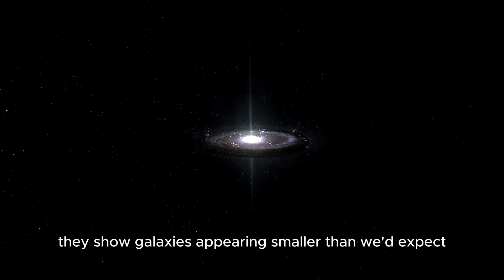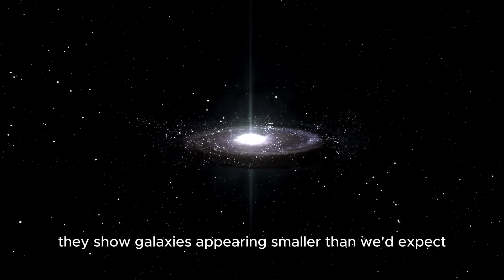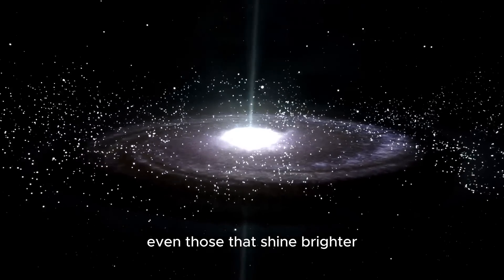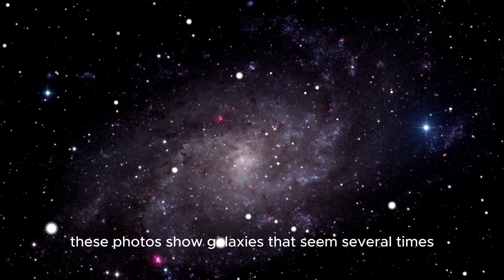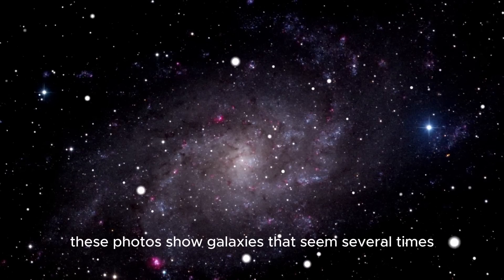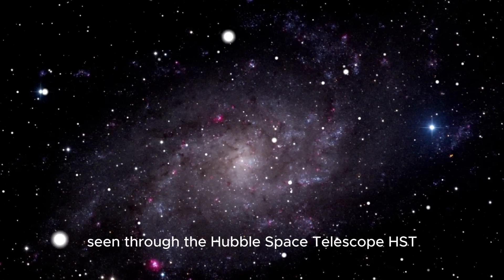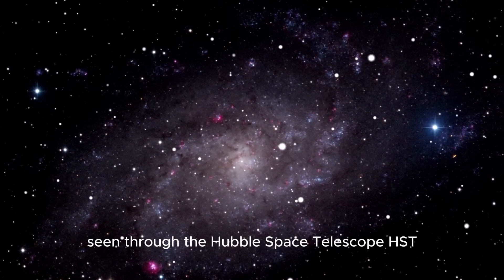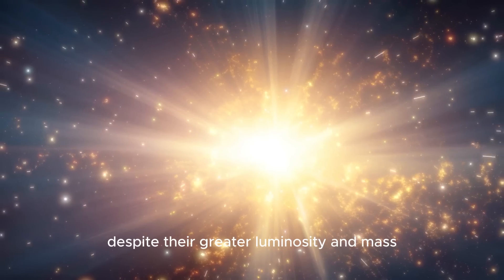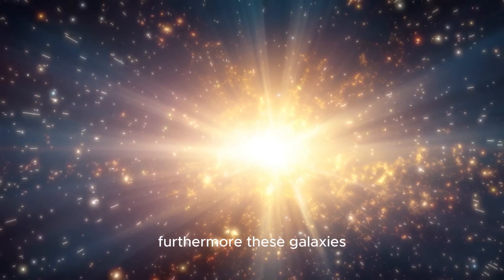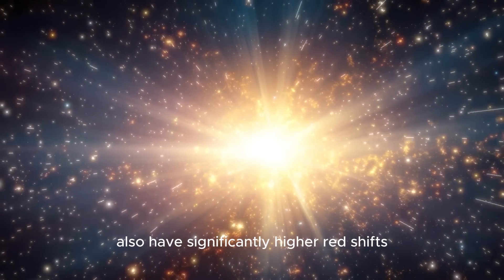Curiously, they show galaxies appearing smaller than we'd expect, even those that shine brighter and pack more mass than our own Milky Way. These photos show galaxies that seem several times smaller than the ones seen through the Hubble Space Telescope, despite their greater luminosity and mass. Furthermore, these galaxies also have significantly higher redshifts, which in layman's terms means they appear to be moving away from us at faster speeds.